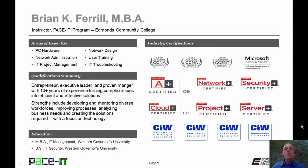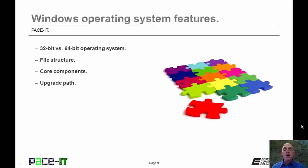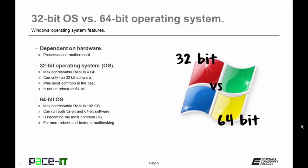I'm Brian Farrell, and welcome to PACE IT's session on Windows Operating System Features. Today we're going to be discussing 32-bit versus 64-bit operating systems, file structure, some core components of modern operating systems, and the upgrade paths for Windows. Let's go ahead and begin this session with 32-bit versus 64-bit operating systems.